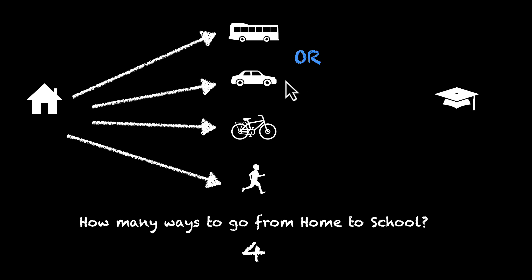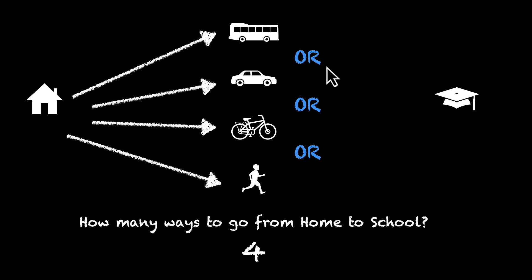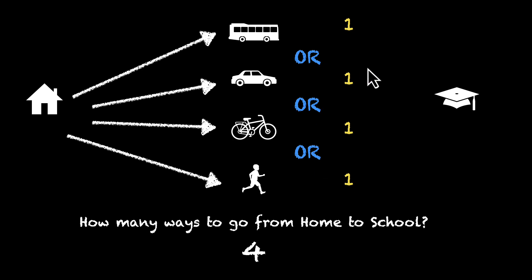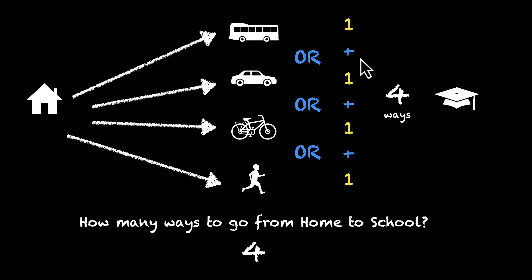I can take the bus, or I can take the car, or I can take the bicycle, or I can walk. This 'or' is a very powerful word — it's giving us another option. To finish this job, we can pick any one of them. There's one way to use the bus, one way to take the car, one way to take the bike, and one way to walk. So one plus one plus one plus one is four. This 'or' is giving us the plus sign, so we do have four ways to go from home to school.